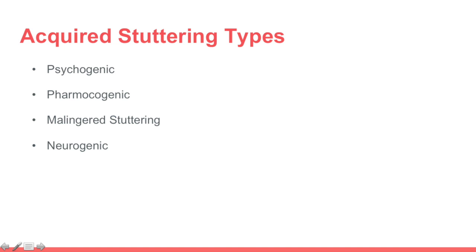Stuttering can be either developmental or acquired in nature, and neurogenic falls under the acquired subtype, along with three others: psychogenic, which finds its origin in psychological or emotional problems; pharmacogenic, which originates as a side effect of medication; and malingered, which is intentionally producing disfluencies for personal gain — this is voluntary, so there are debates in the literature on whether it should be considered stuttering at all.